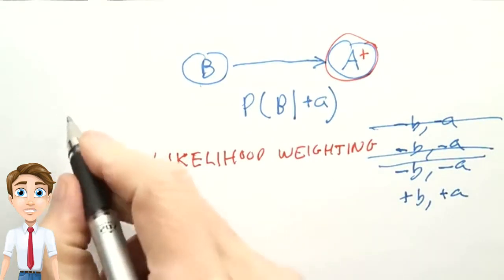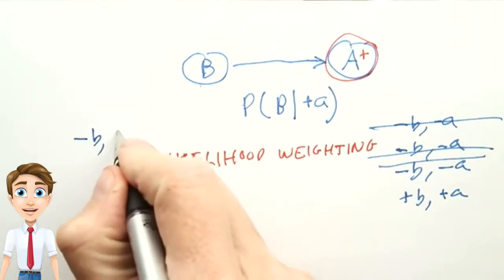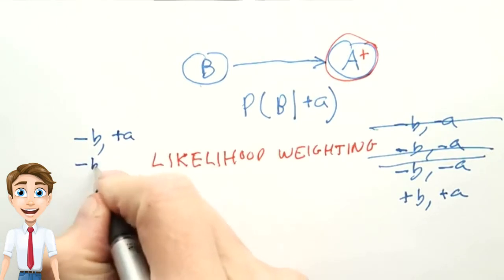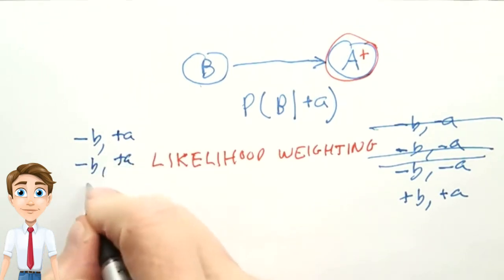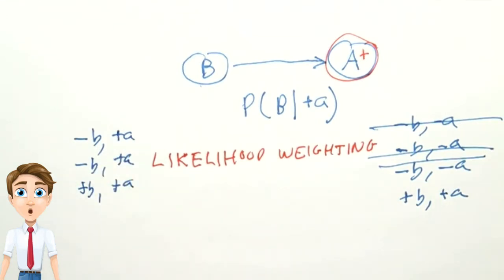We would get a list like minus B plus A, minus B plus A, plus B plus A. We get to keep every sample. But we have a problem. The resulting set of samples is inconsistent.